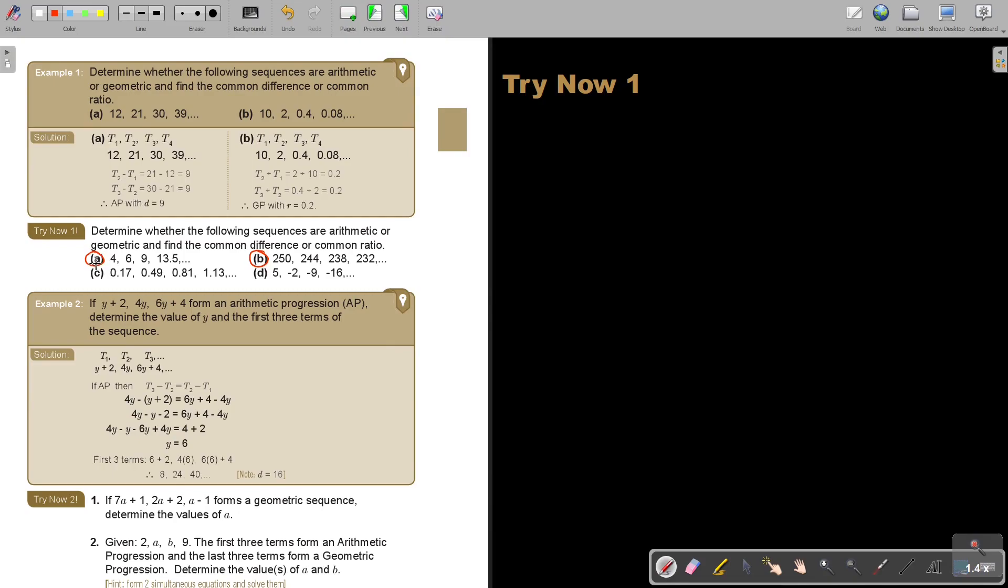Let's look at number A. Now, if you just look at it, you can say 6 minus 4, that's 2. 9 minus, it's 3. So, it's definitely not an AP. But, let's test it now. It's 4, 6, 9, 13.5. So, this is T1, T2, T3, T4.